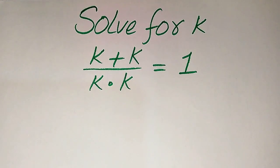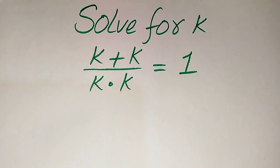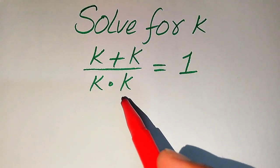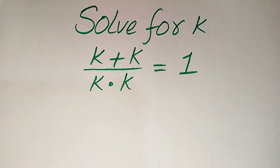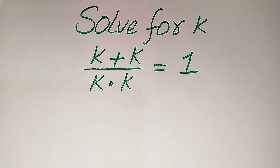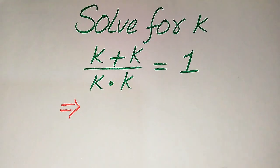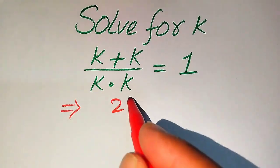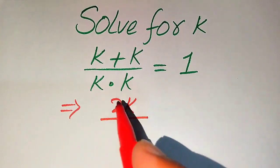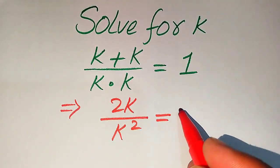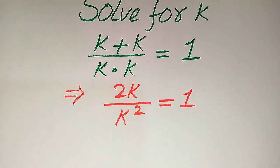Hello everyone. How to solve this problem for the values of k: (k + k) divided by (k multiplied by k) equals 1. We solve this problem for all the values of k. First, we sum up both values: k + k becomes 2k, divided by k multiplied by k equals k squared, and this whole equation equals 1.